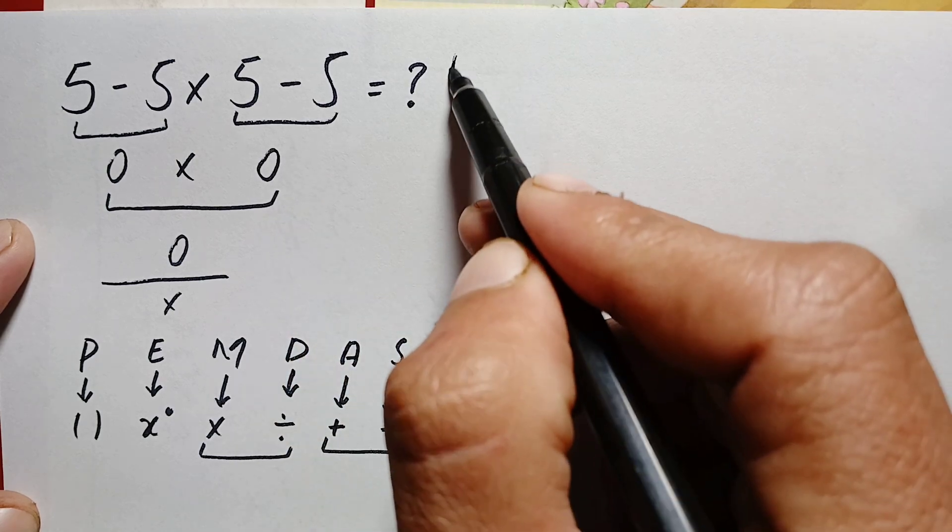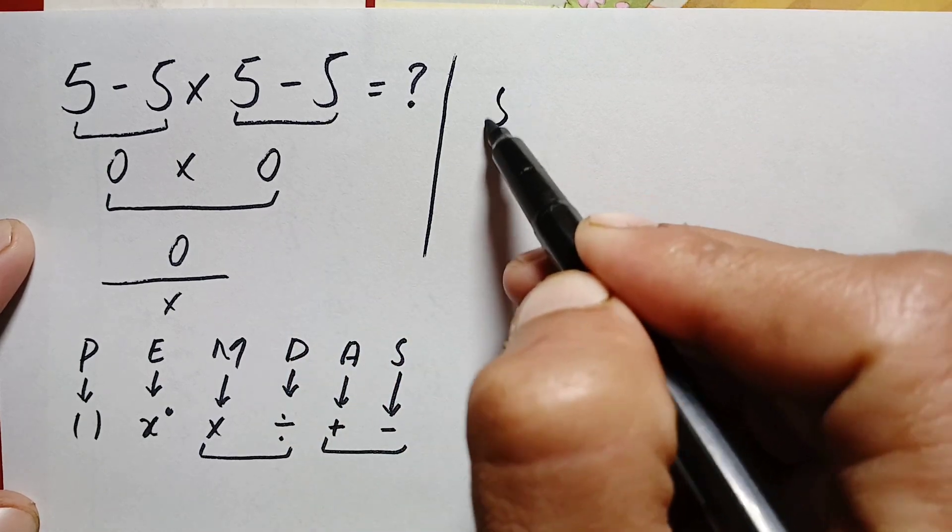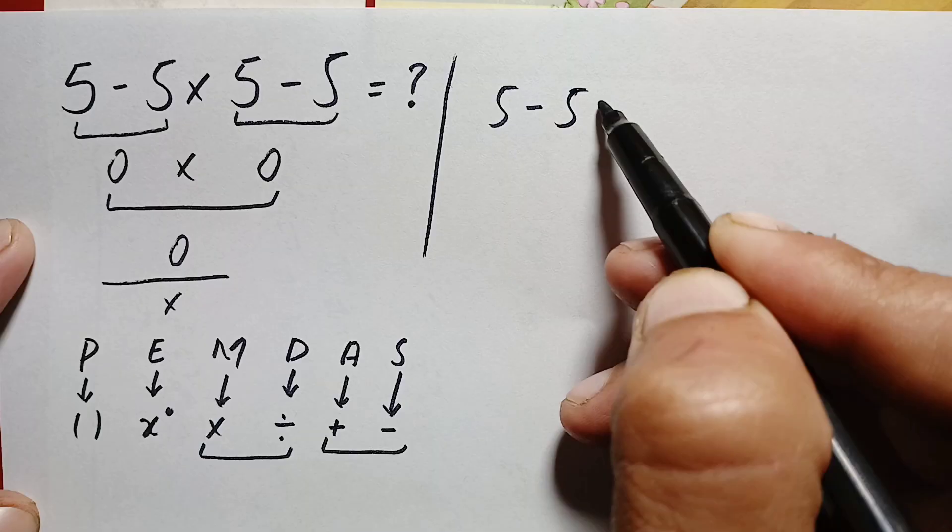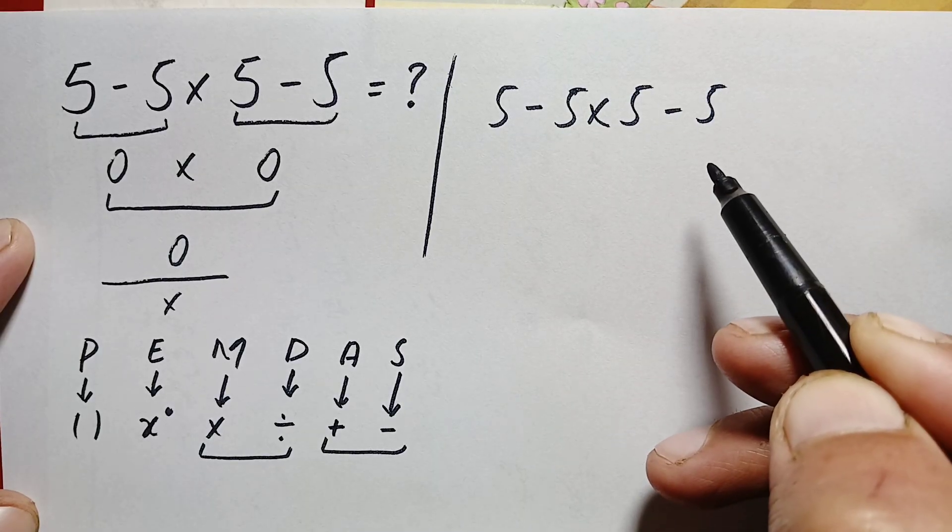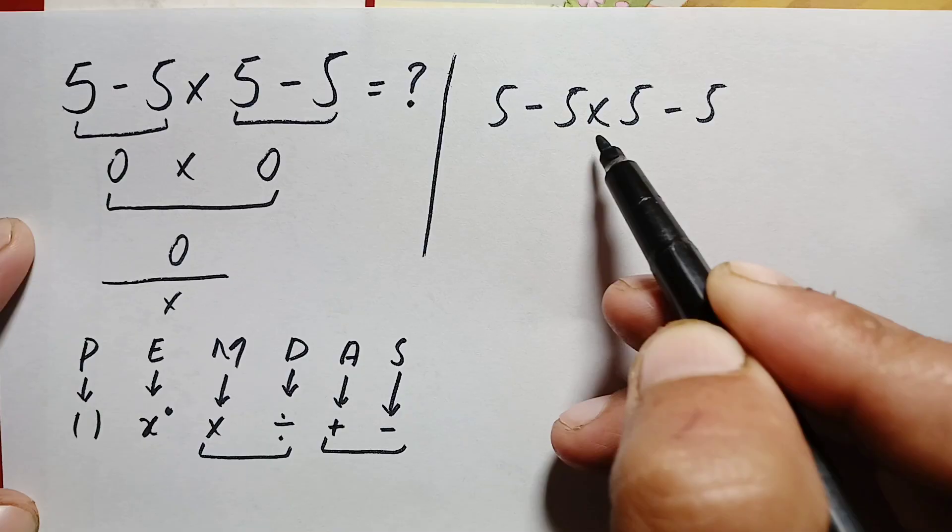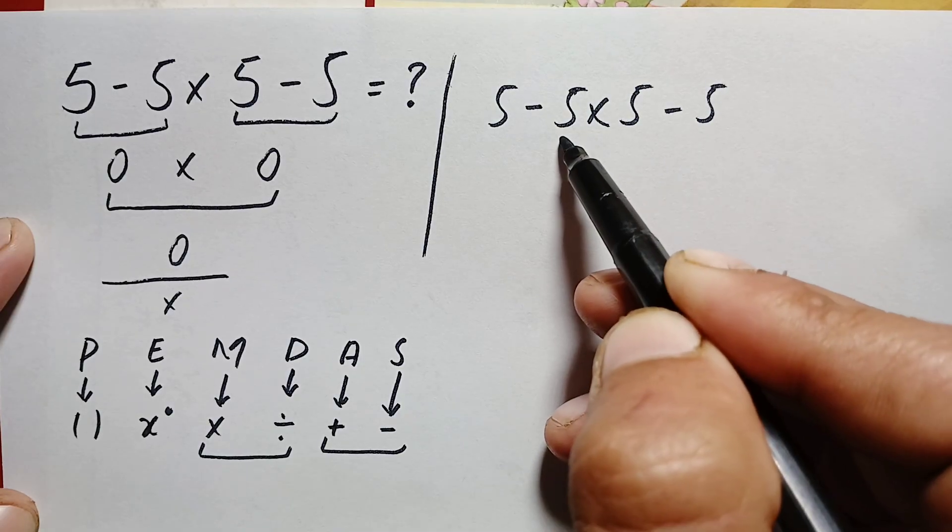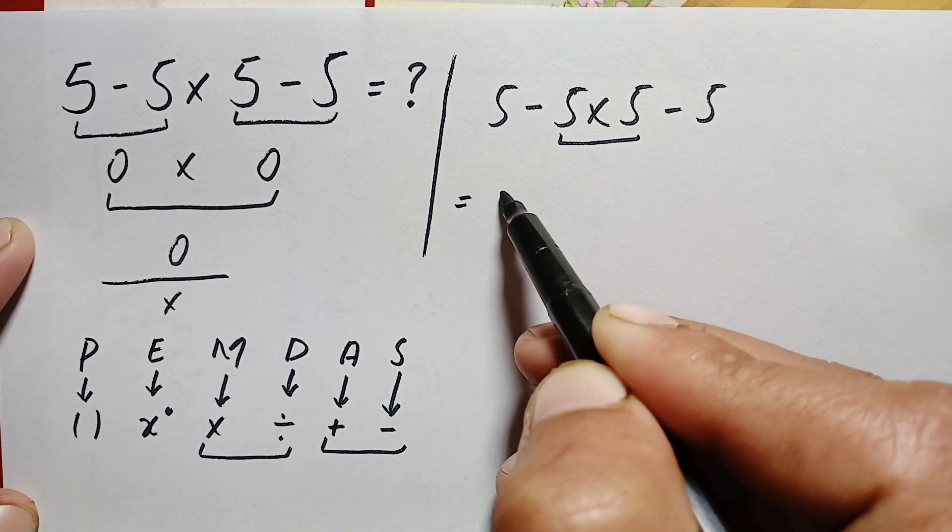Our problem is 5 minus 5 times 5 minus 5. We have three operations: subtraction, multiplication, and subtraction. First, we will do the multiplication.